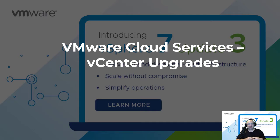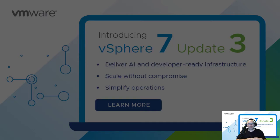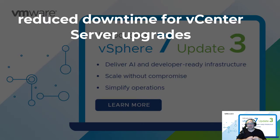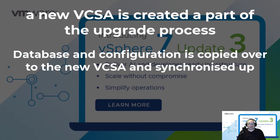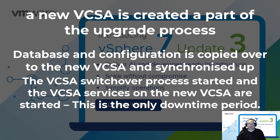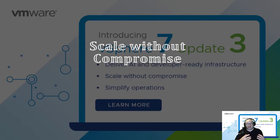Staying with the patching and upgrade subject, let's look at VMware Cloud Services vCenter updates. If you have VMware Cloud on AWS, you will now see reduced downtime for vCenter Server upgrades. A new VCSA is created as part of the upgrade process; the database and configuration are copied over to the new VCSA and synchronized. The VCSA switchover process is then started and the vCSA services on the new VCSA are started — this is the only downtime period.